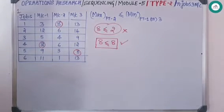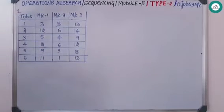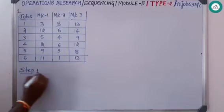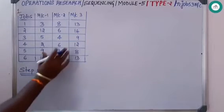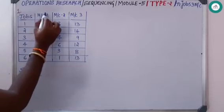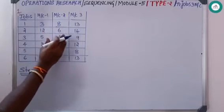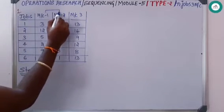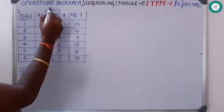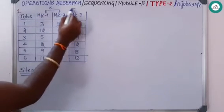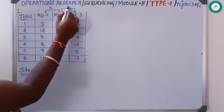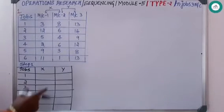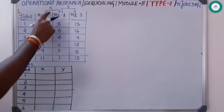Proceeding with the solution — Step 1 is to find the best sequence. To do this, the three machines need to be condensed to two machines. We add the first machine and the intermediate machine (machine two) and call it X, and the last machine plus the intermediate machine and call it Y, then write down the new table.